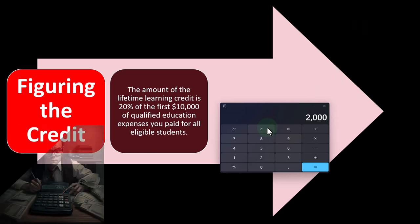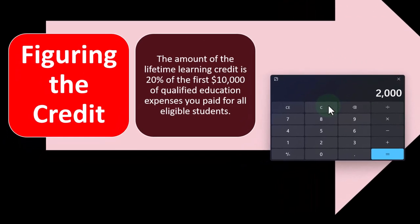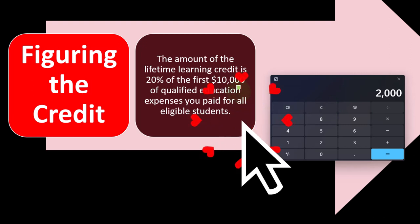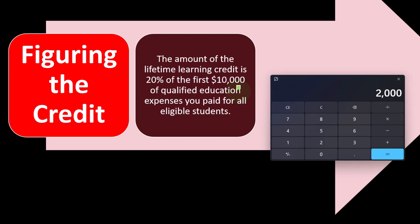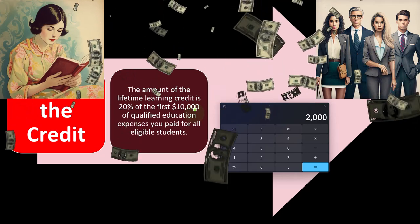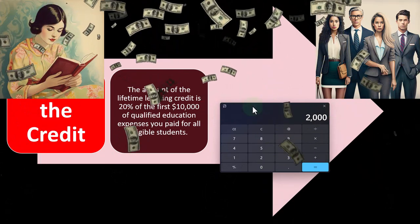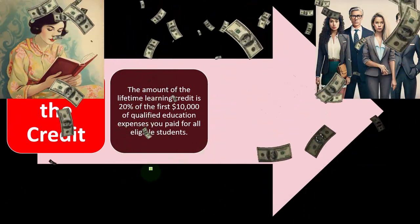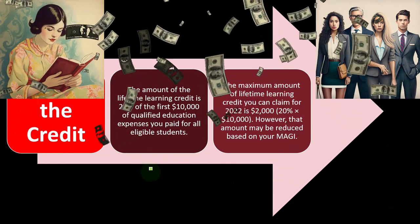The American Opportunity Credit's maximum is $2,500, and it was easier to reach that maximum because you only needed about $4,000 in qualified education expenses. The items qualifying as education expenses were also more encompassing. For the Lifetime Learning Credit, you need a full $10,000 in qualified education expenses to maximize the potential credit at $2,000.